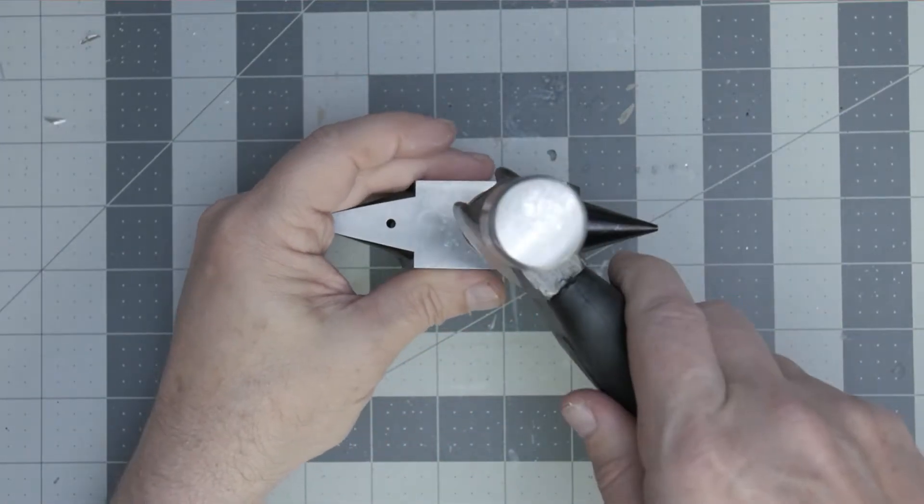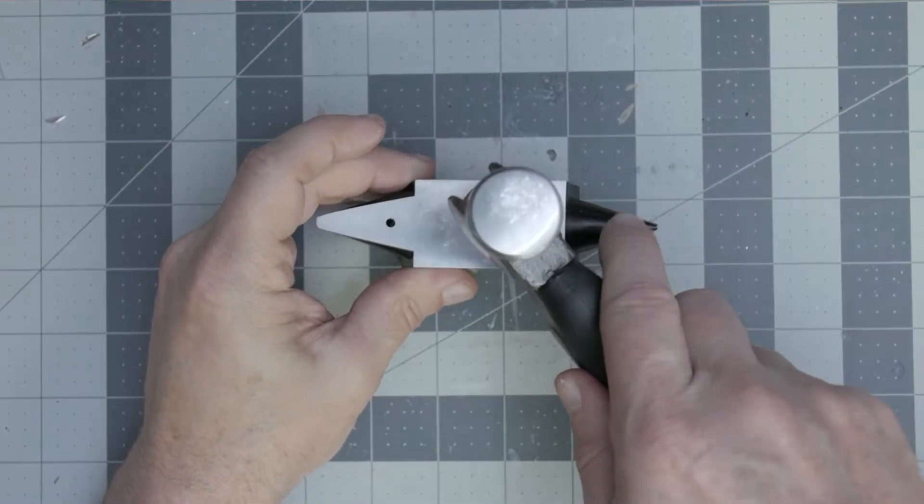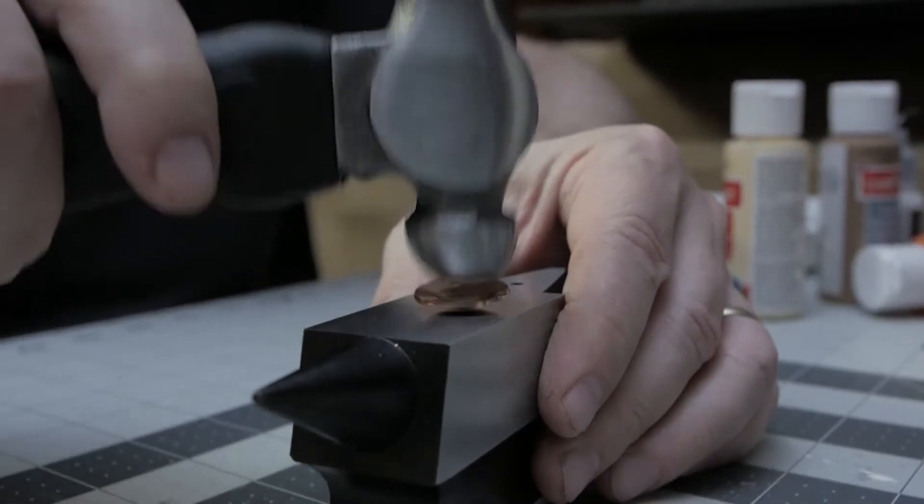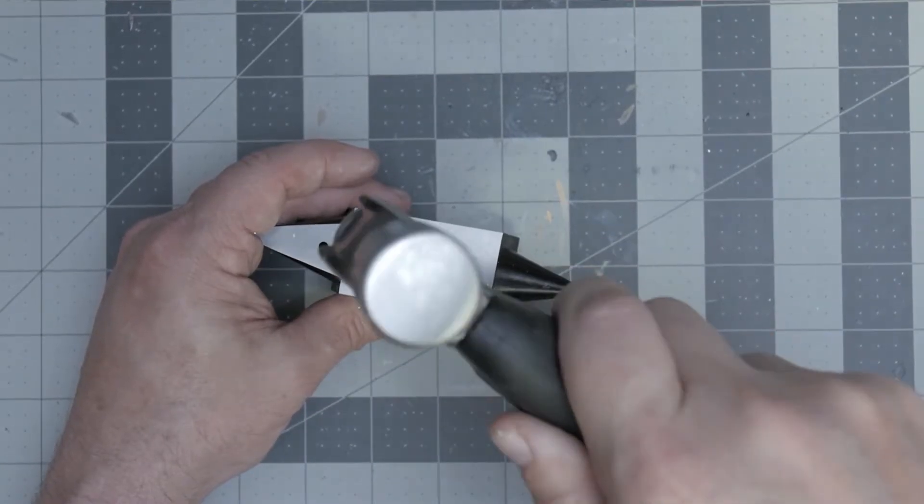The first thing I'm going to do is beat the snot out of this thing on a little jeweler's anvil, beat it into the shape of the tip of this hammer, giving it a nice bowl shape.